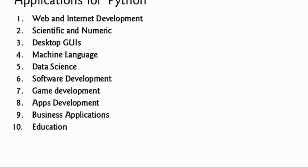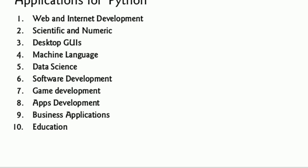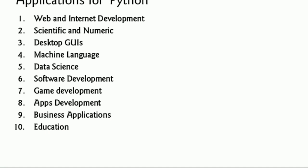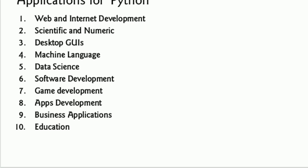We can use Python for web development — Django is a very common and most popular framework. For scientific and numeric use cases, scientists can use Python, along with NumPy. Python also supports desktop GUI development, and machine learning — as many of you know, Python is widely used for machine learning and data science.